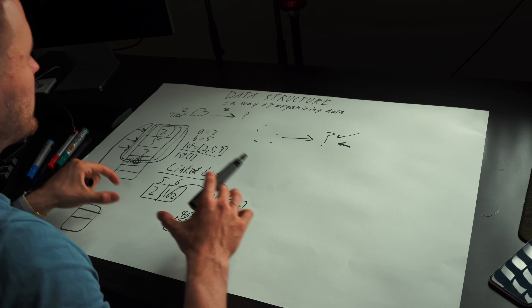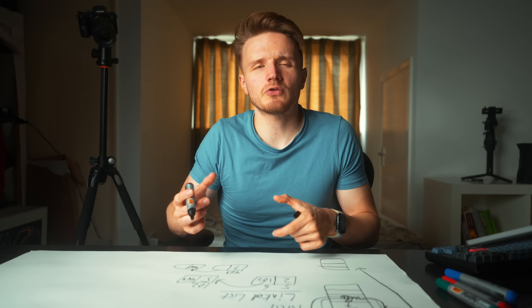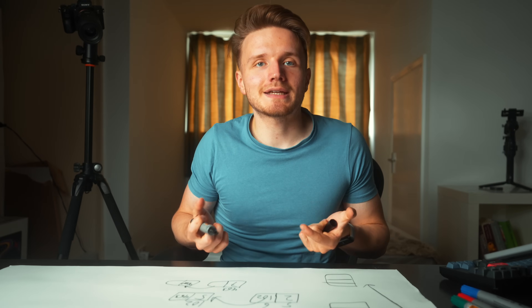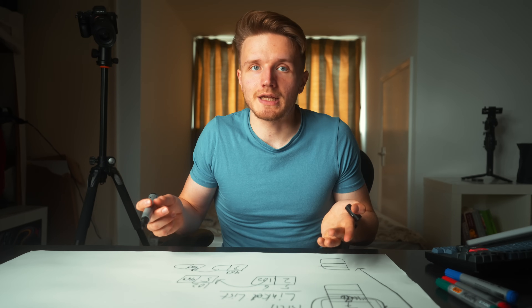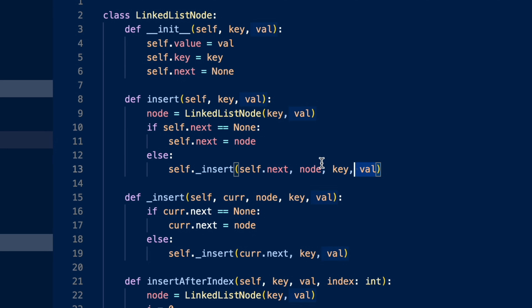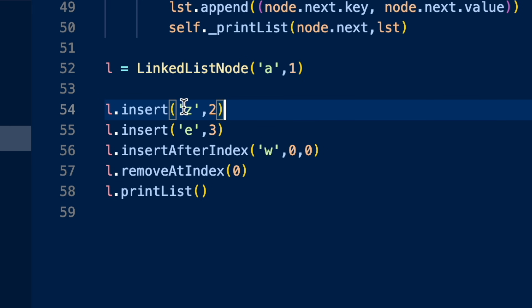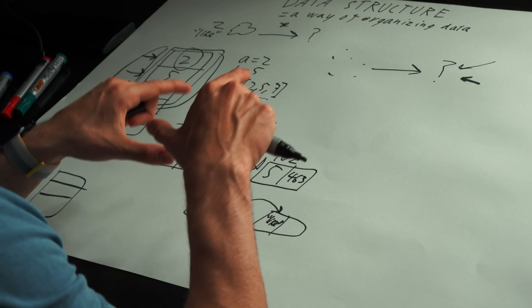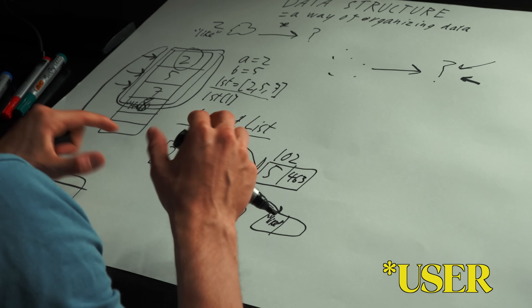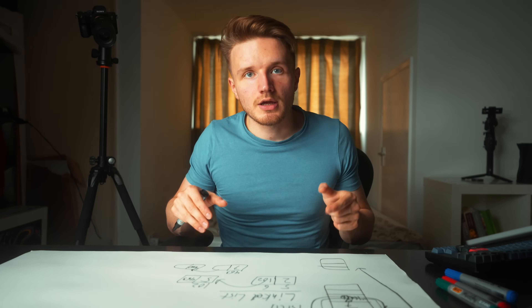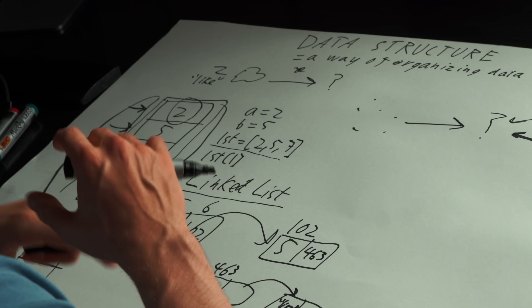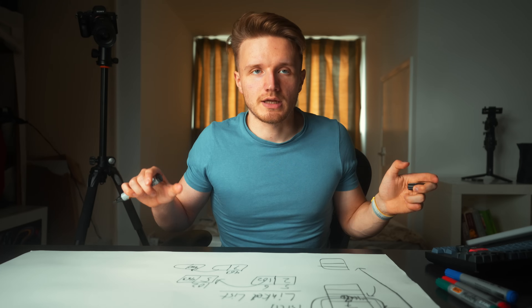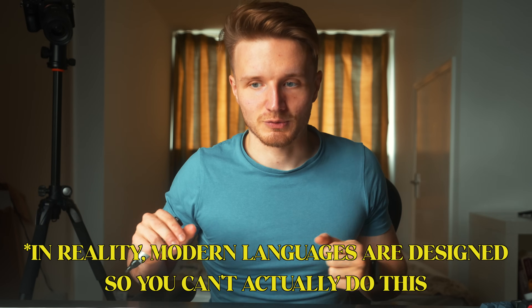You can see how we already, with very simple requirements, have a need for a slightly more complex data structure. From the programmer's perspective, when you want to add something to the list, you just call a method defined inside the data structure to append an element. Under the hood, all of this stuff is happening — all this drama — but the programmer doesn't even need to know anything about it. But crucially, if the designer of this program hadn't designed this correctly, it could be causing problems and causing the whole hardware to essentially crash.